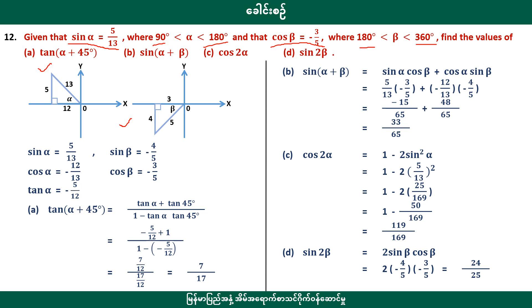Find the values of beta. Sine alpha is minus 3 by 13, cosine alpha is minus 3 by 13, 2 and 2. Sine beta is minus 4 by 5, cosine beta is minus 3 by 5. Alpha is minus 45 degrees, 1, 2, and 1 minus 2.